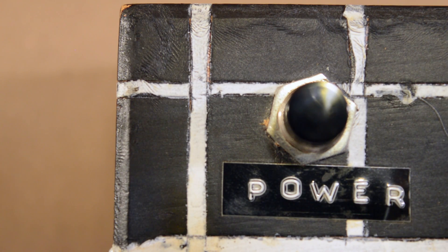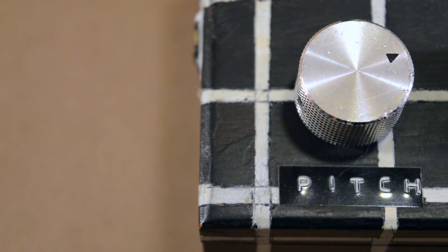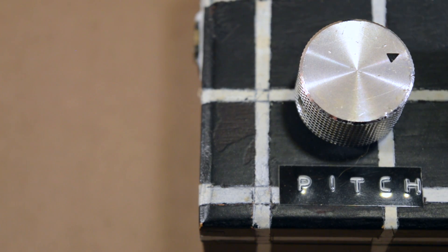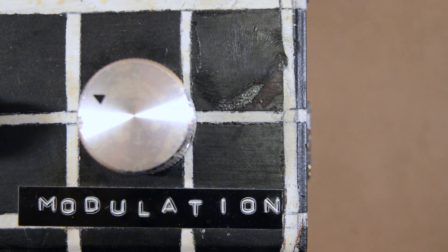The power switch controls power into the unit. The pitch knob controls the frequency of the primary waveform. The modulation knob controls the secondary waveform.